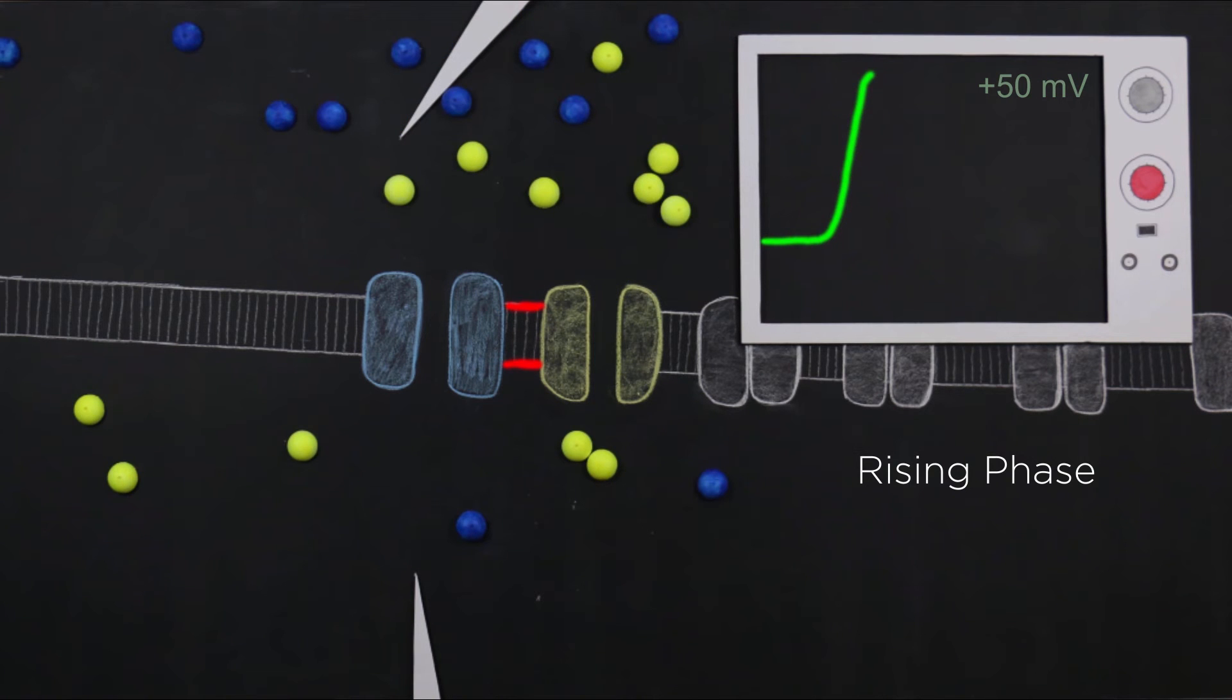Third, once the membrane potential depolarizes sufficiently, the sodium channels become inactivated, stopping the sodium influx. This is the end of the rising phase of the action potential.